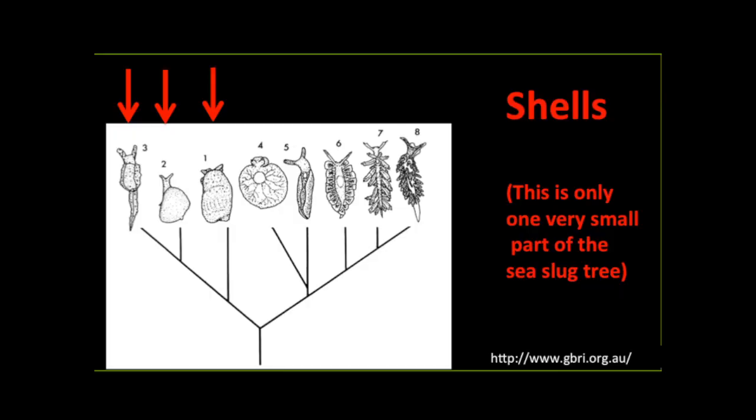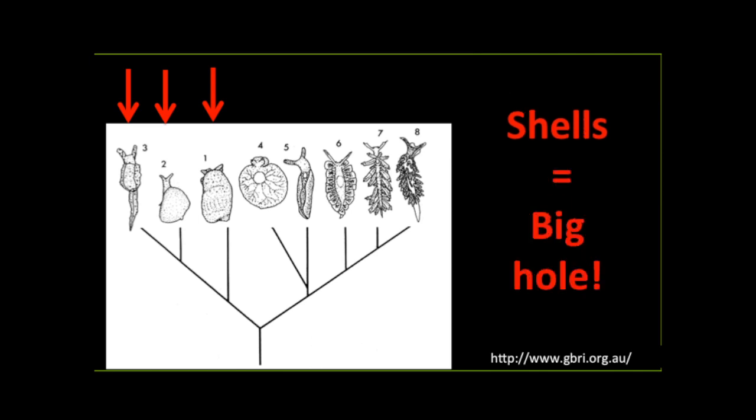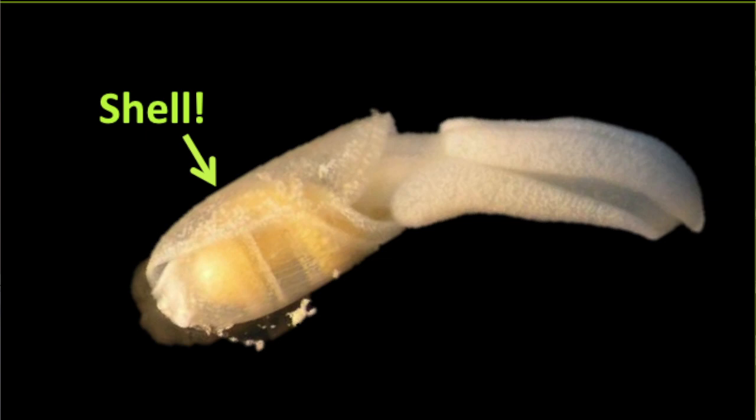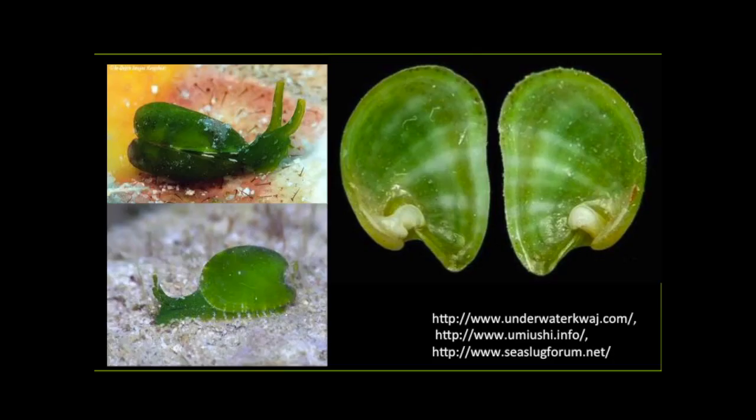The word slug has the exact same problem. If we look at the evolutionary tree of shell-less snails, we see that shells have actually been lost a few times in different groups. So we have to choose: avoid using the word slug because it excludes groups that should be included, or change the definition to include all members and their ancestors. For the purposes of this vlog, I'm changing the definition. For me, a sea slug can have a shell — or two.